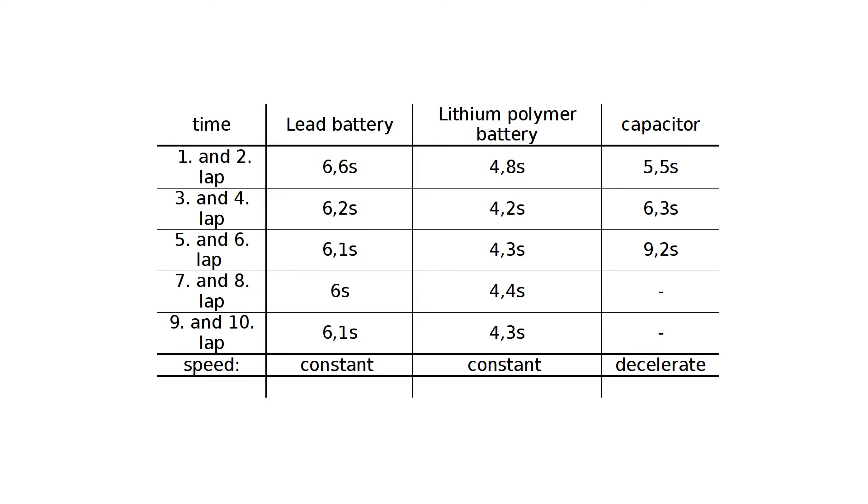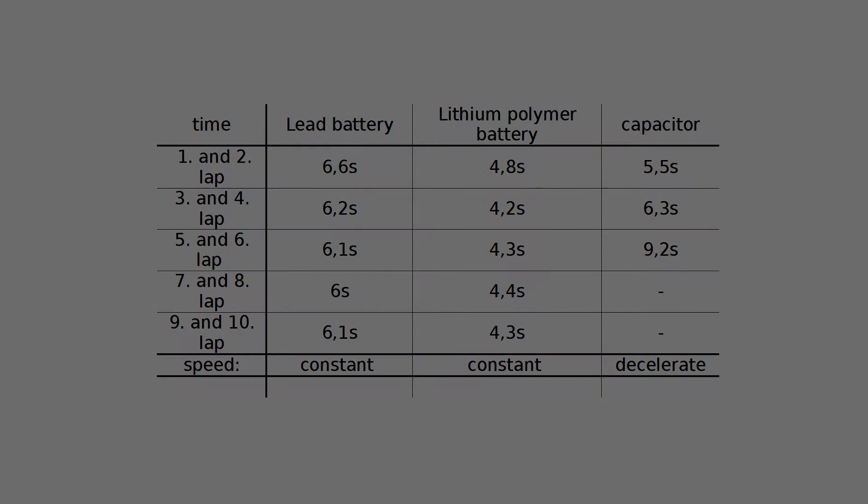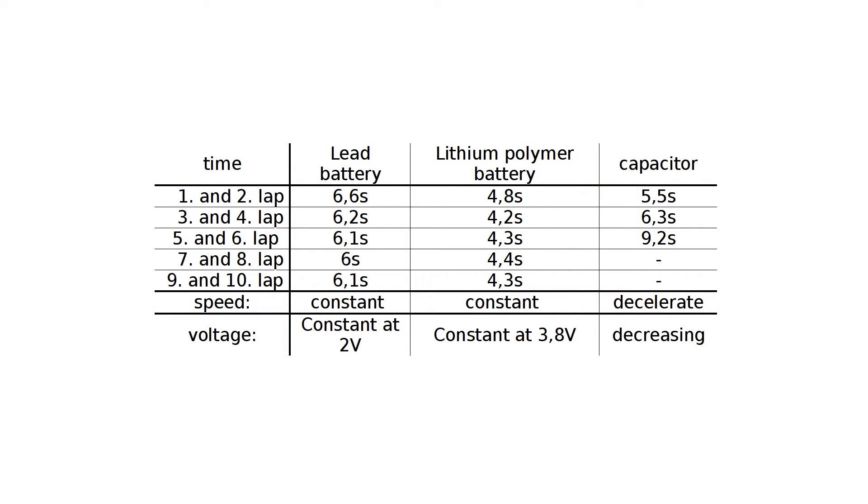In summary for our experiment, the two batteries provide a constant speed whereas the speed continues to decrease with the capacitor. Furthermore, the lead battery produces a lower speed than the lithium polymer battery. In terms of voltage, this means that the batteries maintain their voltage constantly, whereas the capacitor applies a decreasing voltage and that the lead battery voltage, as measured, is less than the voltage of the lithium polymer battery.